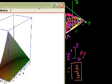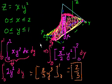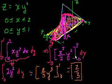In the last video, we figured out the volume between this surface, which was xy squared, and the xy plane when x went from 0 to 2 and y went from 0 to 1. The way we did it is we integrated with respect to x first. We picked a y and figured out the area under the curve, then integrated with respect to y. Our answer was 2 thirds.